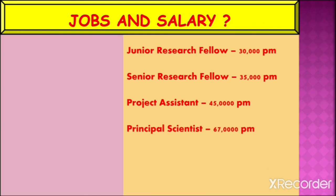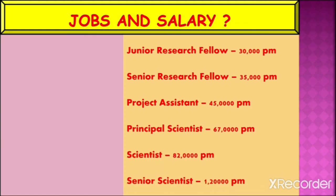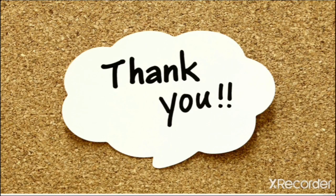Principal scientist: 67,000 per month. Scientist: 82,000 per month. Senior scientist: 1 lakh per month salary package available at starting. Thank you.